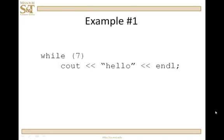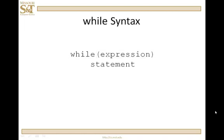Here is an example of an infinite loop. Let's go back to the template and describe how this construct works. The compiler is going to check, when we enter the while loop, the truth value of expression. If that evaluates to true, then statement is going to be executed. After that, control passes back up to the expression and it is checked again. If it's true, statement is executed, then back to expression. This continues until the expression changes to false — once it changes to false, we exit the while statement.